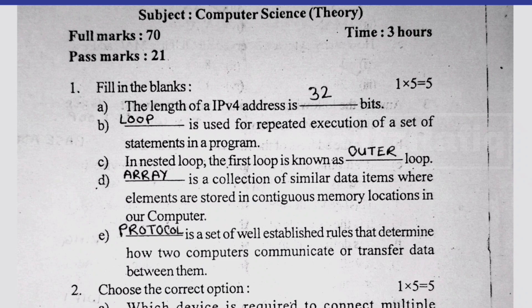...then it will be 4 bytes, but if we convert into bits it will be 32 bits. The next question: loop is used for repeated execution of a set of statements in a program. Third one, in nested loop the first loop is known as outer and the second is inner. Array is a collection of similar data items. Number e, protocol is a set of well-established rules.